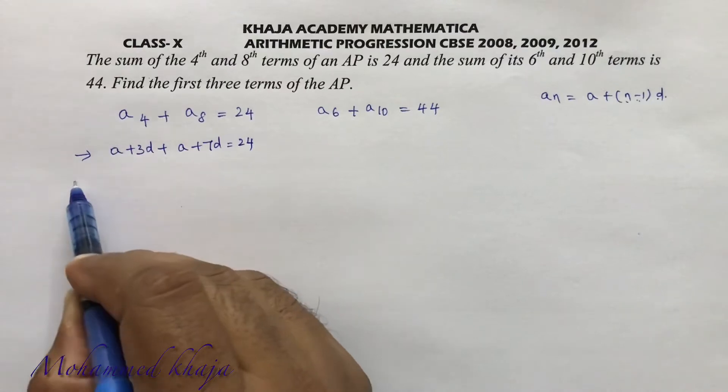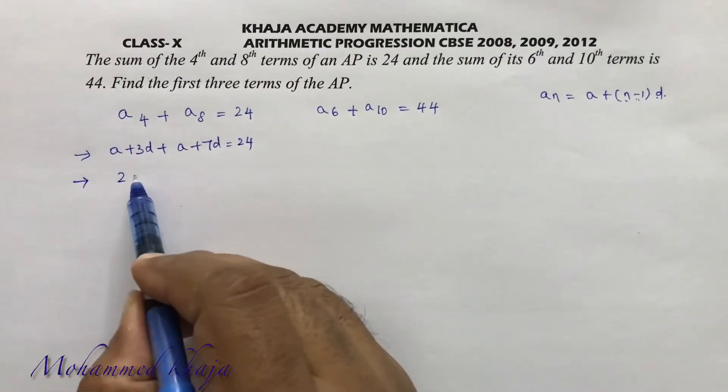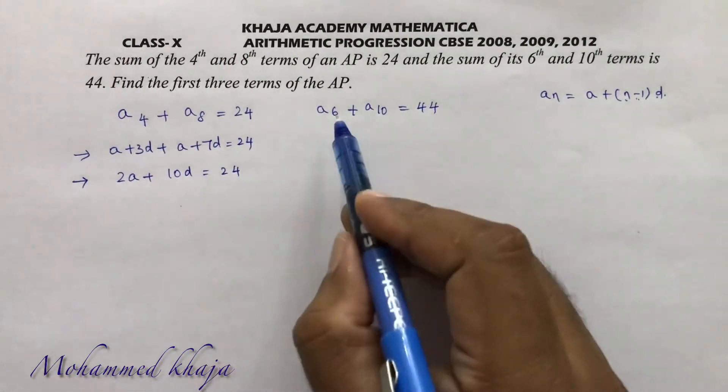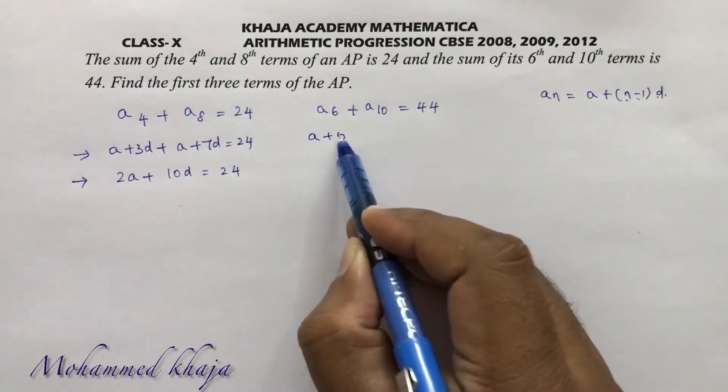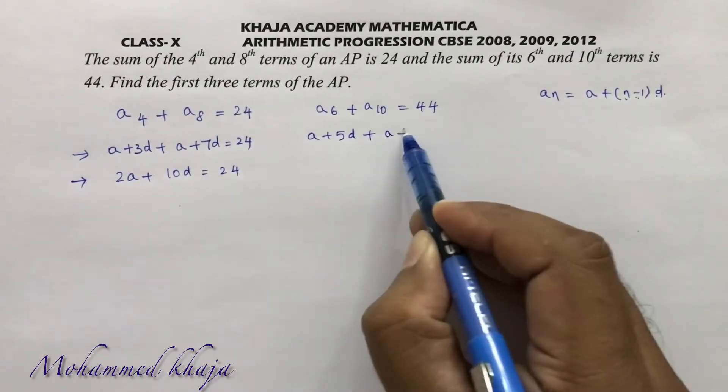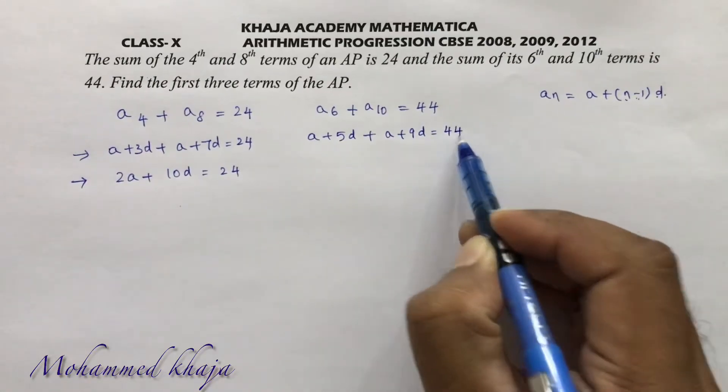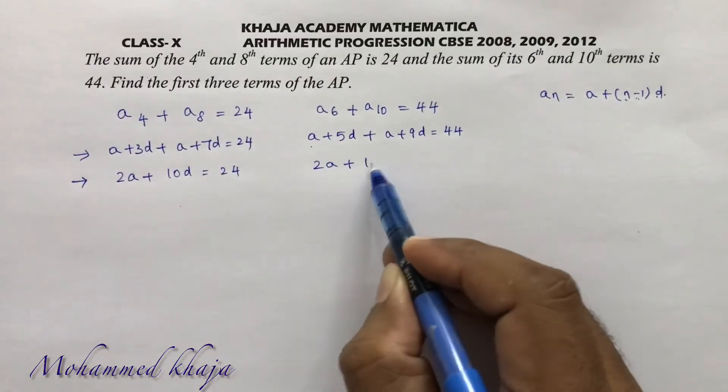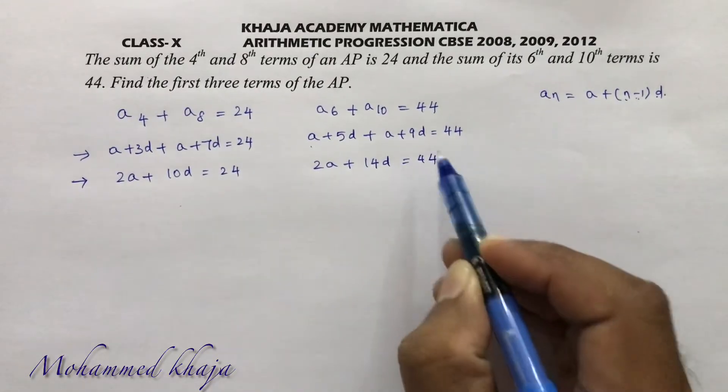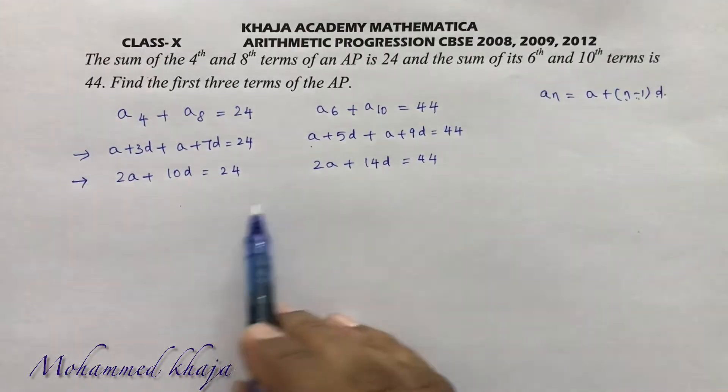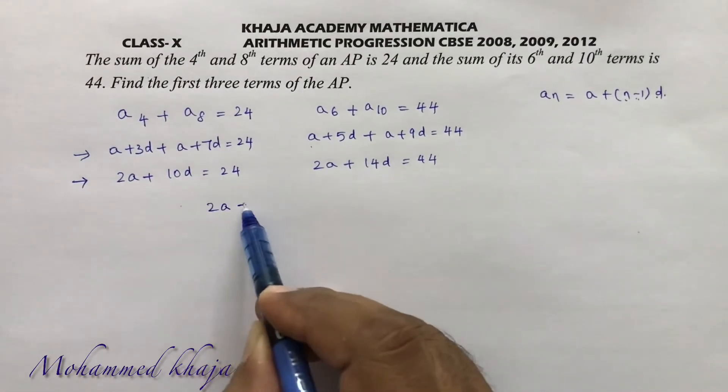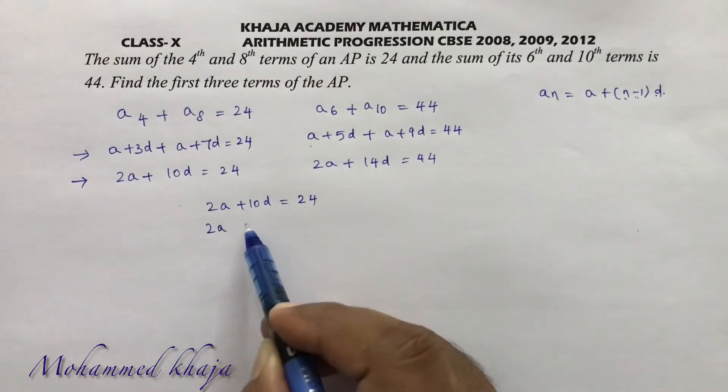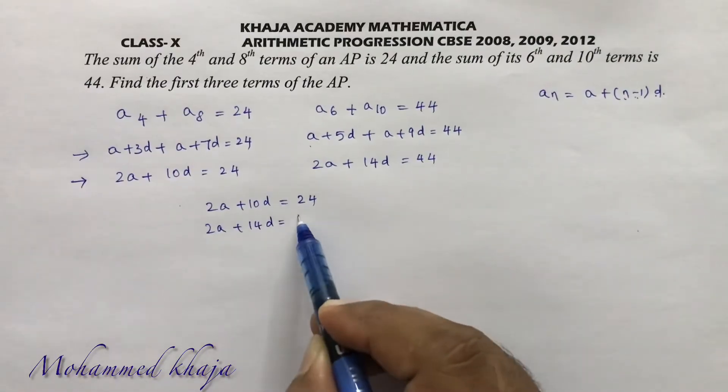This equals 24, and a + a is 2a + 10d = 24. Here a6 will be a + 5d, a10 will be a + 9d = 44. So a + a, 2a + 5 + 9 is 14d = 44. Now I'll eliminate these two equations: 2a + 10d = 24, 2a + 14d = 44.